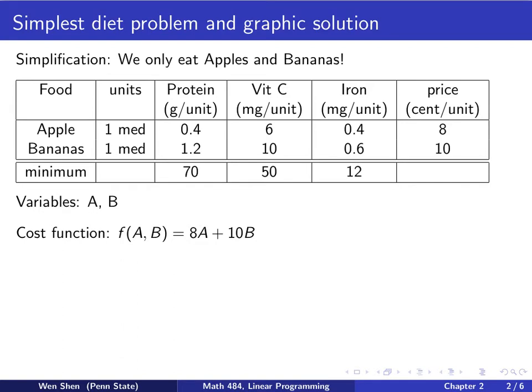Since we have only apples and bananas, now we need only two variables. We call them A and B, where A is for apple and B for banana. For the cost function, defined similarly as before, now is a function of two variables, A and B, and we only have two terms. 8, that's the 8 cents per unit of apple, so it's 8A plus 10B for bananas.